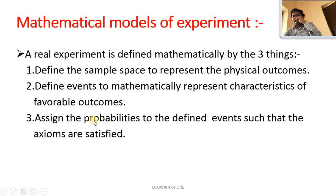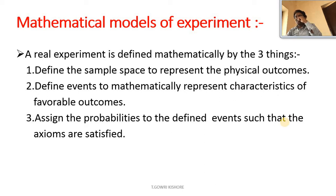Number three: assign the probabilities to the defined events such that the axioms are satisfied. For each defined event we need to assign probabilities such that the axioms are satisfied.